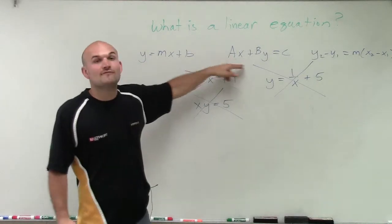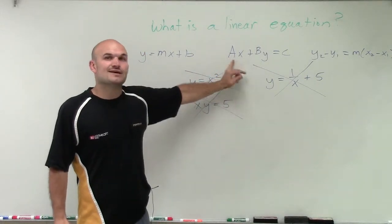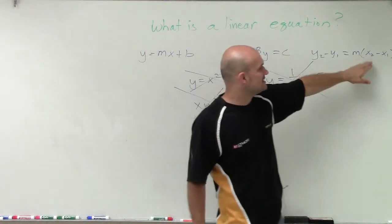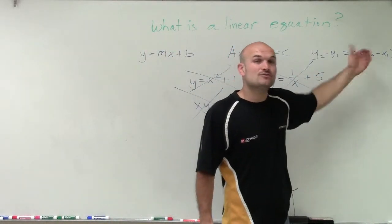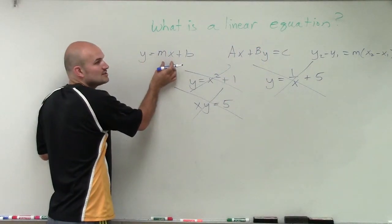And you might say, well, here I have a variable a and x multiplied by each other. But remember, your a represents a real number. In the same case here, the x1 and x2, those also represent real numbers. As well as here, my m represents the real number slope.